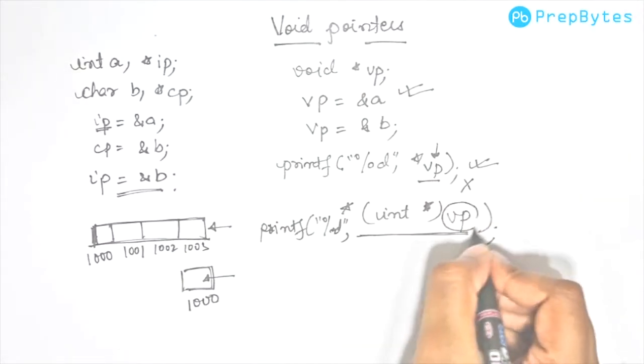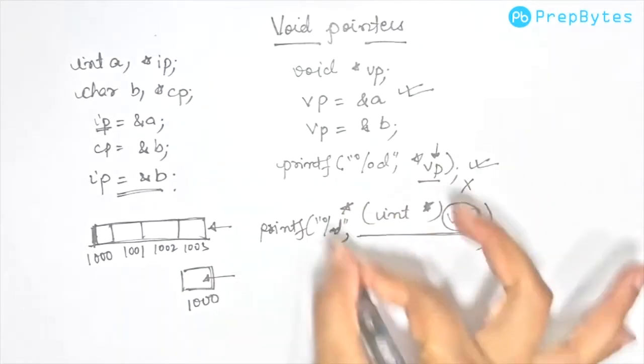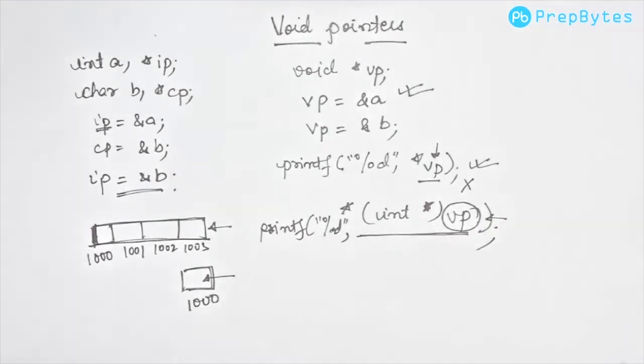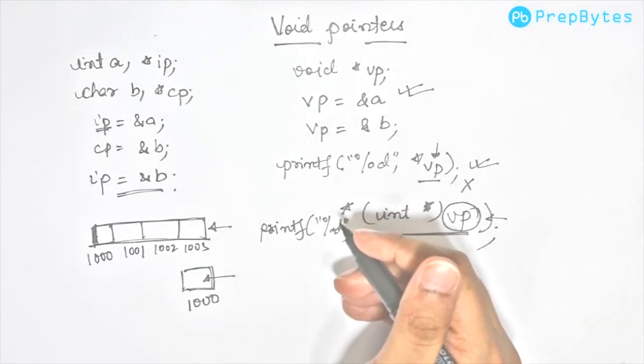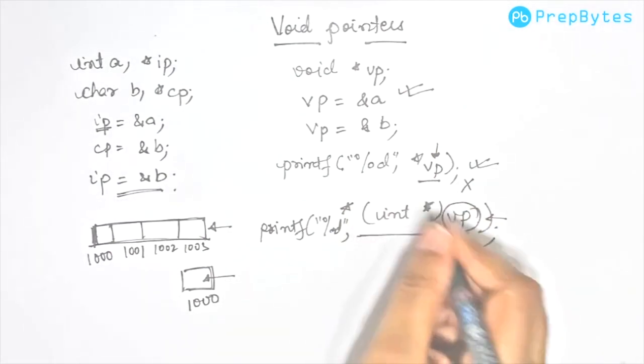The void pointer still remains void; it's just that during this printing, the void pointer gets converted into an integer pointer and the value is accessed. We will come across void pointers many times and will do this typecasting frequently.